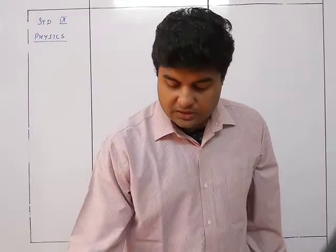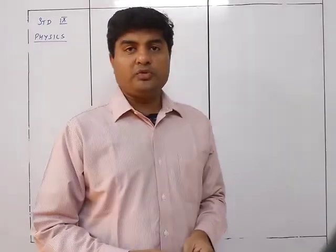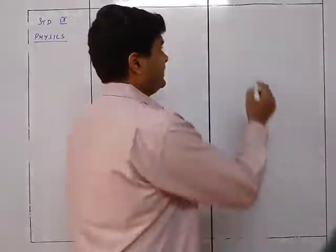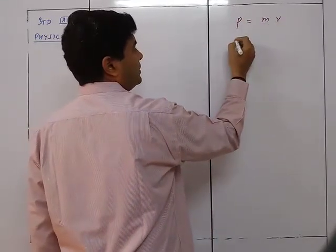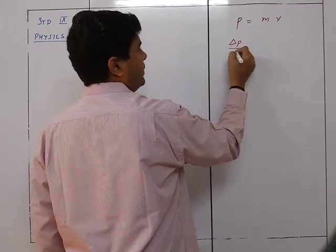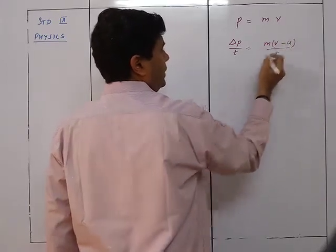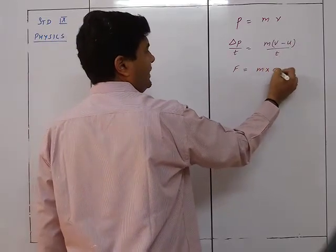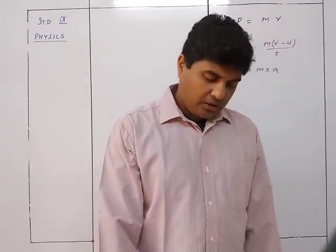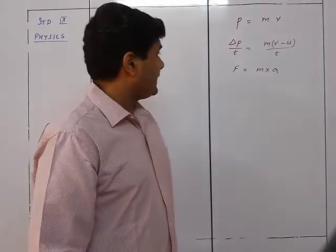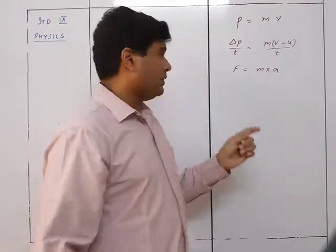We now look at the numericals for the second law of motion. The formulas required are: momentum p equals m times v; change in momentum delta p upon t equals m(v minus u) upon t; and F equals m times a. These are the main formulas needed, along with the change in momentum upon time.